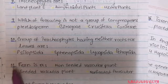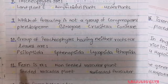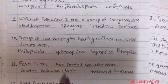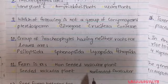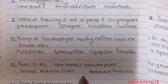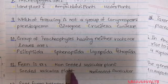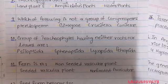Question 11: Fern is — A. A non-seeded vascular plant, B. A seeded vascular plant, C. A non-seeded avascular plant. If you know the characteristics of fern, you will recognize it is a vascular plant and a non-seeded vascular plant. So option A for question number 11 is correct.